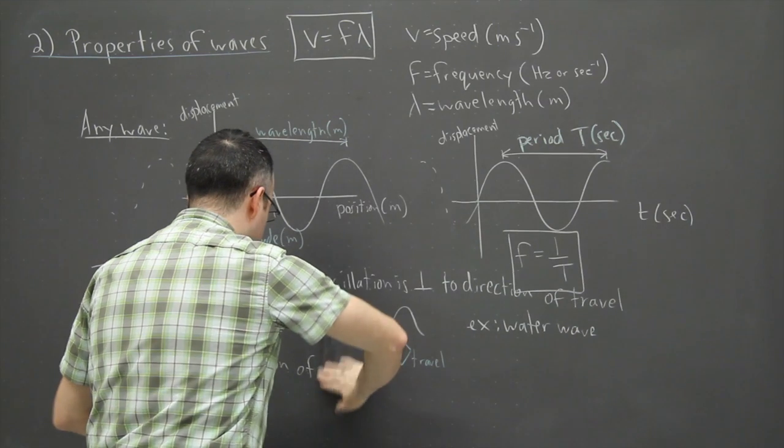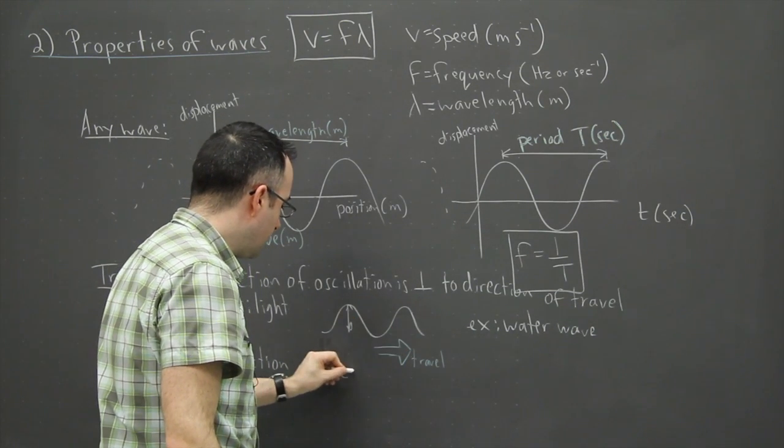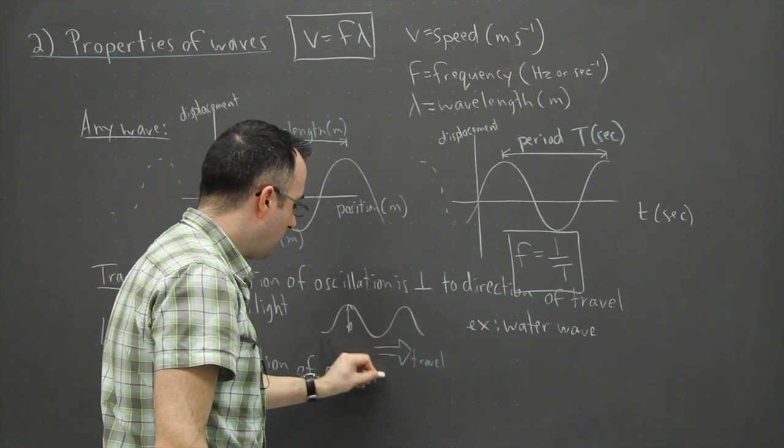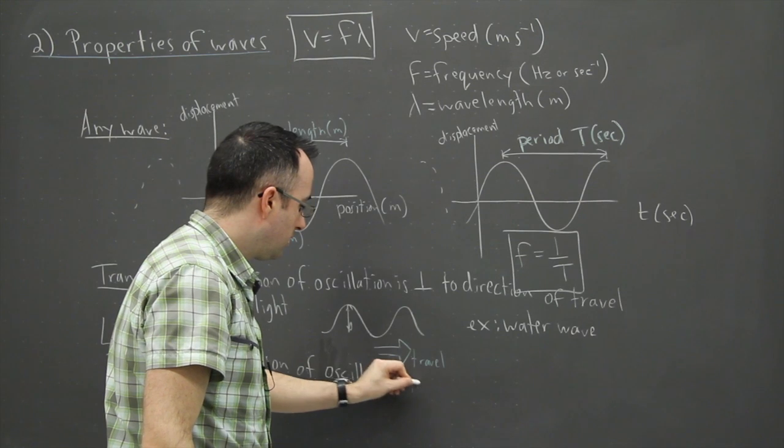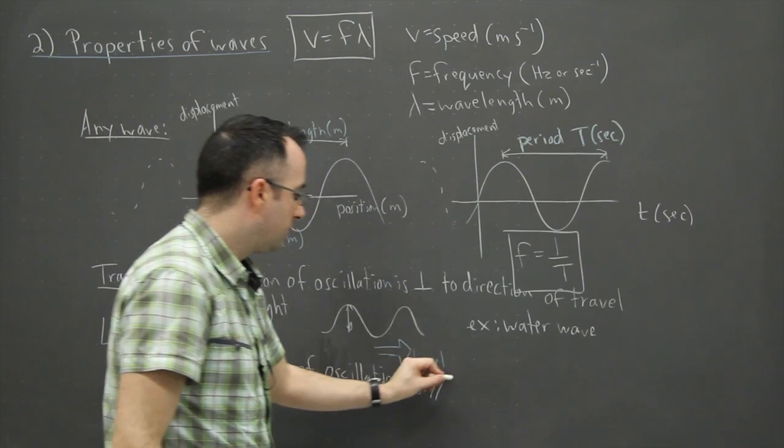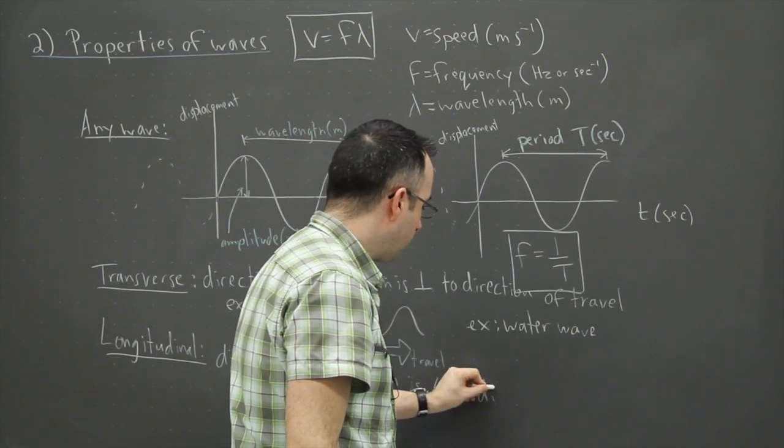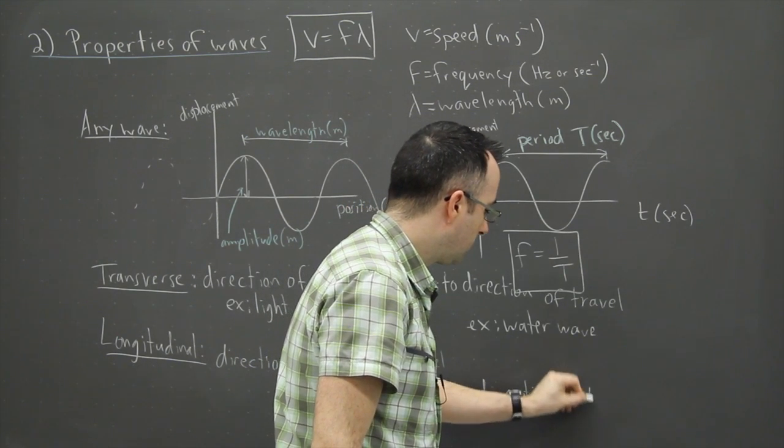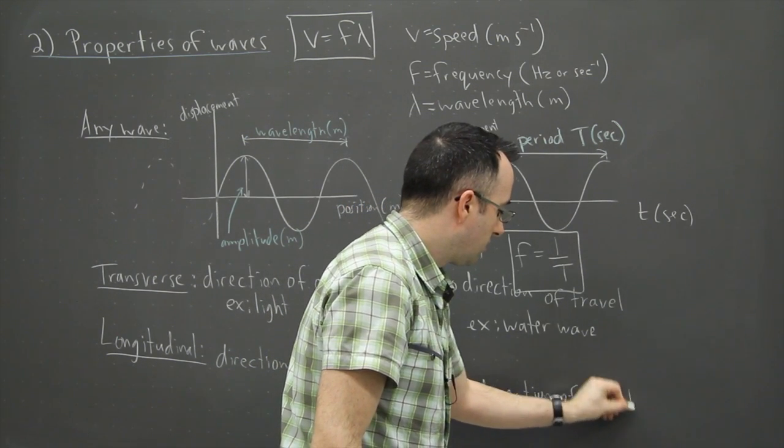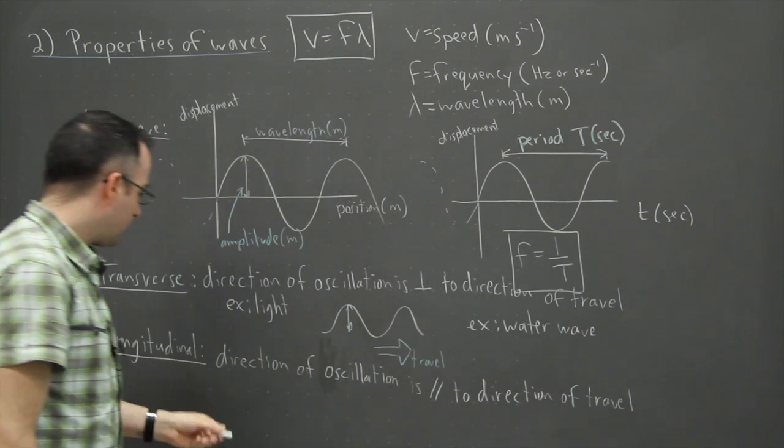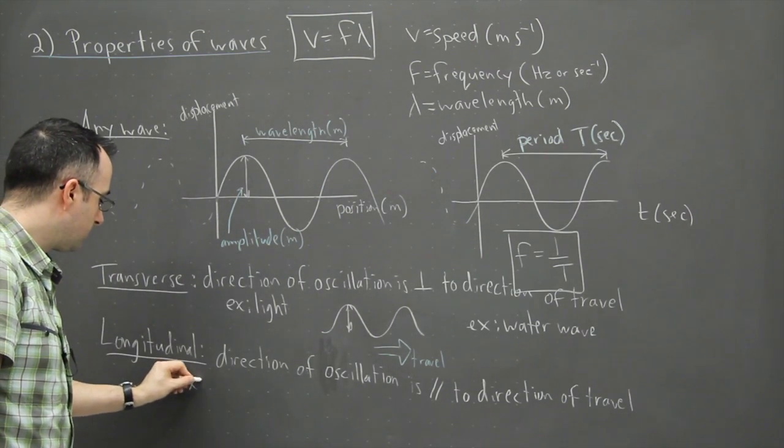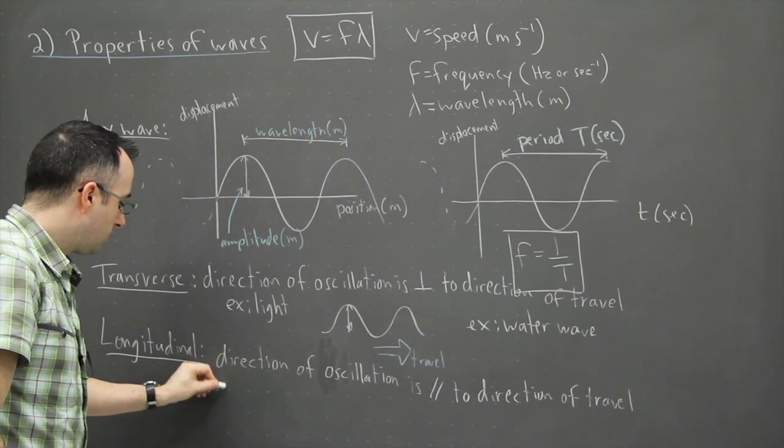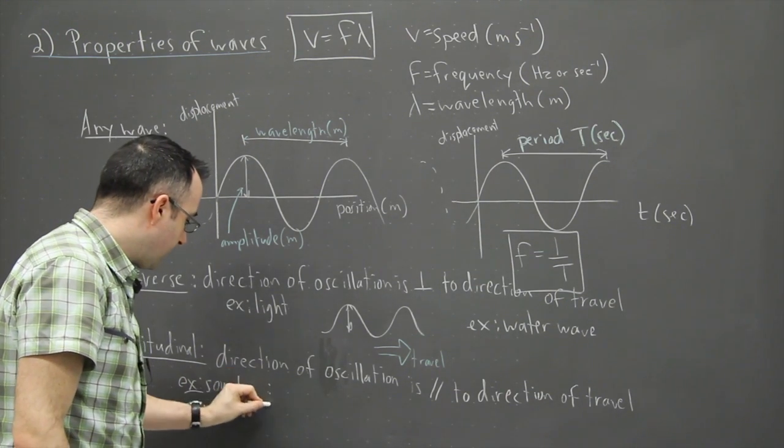We have another type of wave which is longitudinal. That is when the direction of oscillation—we use this symbol for parallel—is parallel to the direction of travel.